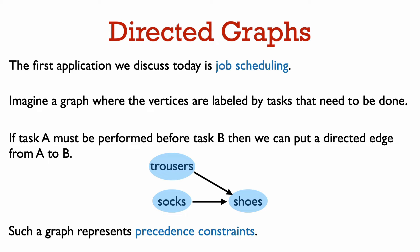You have to put on socks before shoes, so we put a directed edge from socks to shoes. Likewise, there is a directed edge from trousers to shoes. But you can put on your socks before your trousers or vice versa, so there is no edge between trousers and socks. In this way, the graph represents precedence constraints between the tasks to be done.